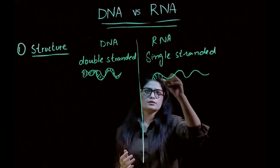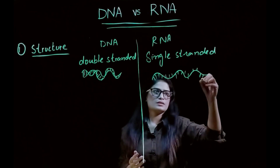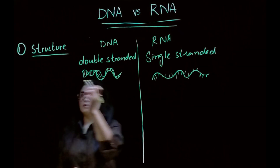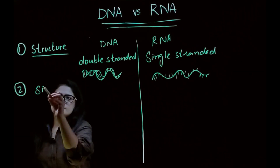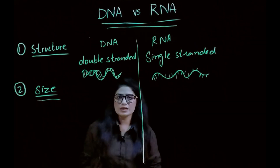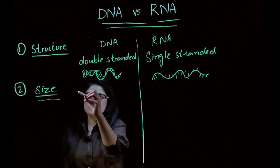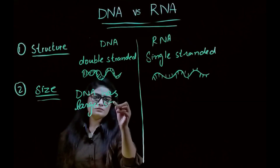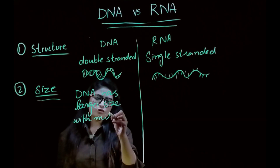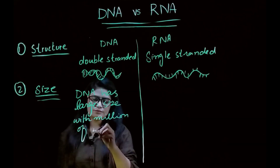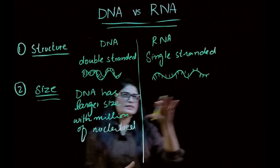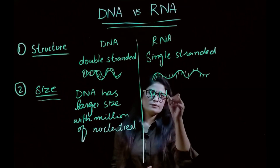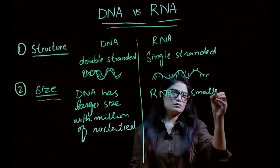You can see only one strand for RNA. So this is the basic difference: DNA is double-stranded and RNA is single-stranded. The next difference is their size. DNA is actually much larger, with millions of nucleotides. RNA is smaller than DNA.